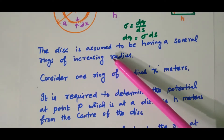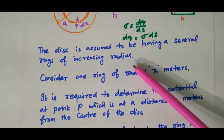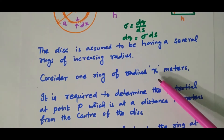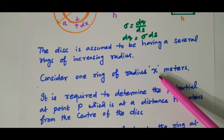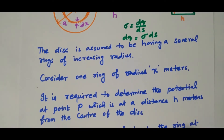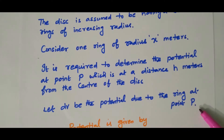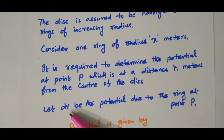The disk is assumed to be having several rings of increasing radius, from 0 to A. We consider one ring at x meters with a thickness of dx. Our aim is to find the potential at point P, which is at a distance h meters. The total potential is V, and dV is the potential due to the small ring of thickness dx.